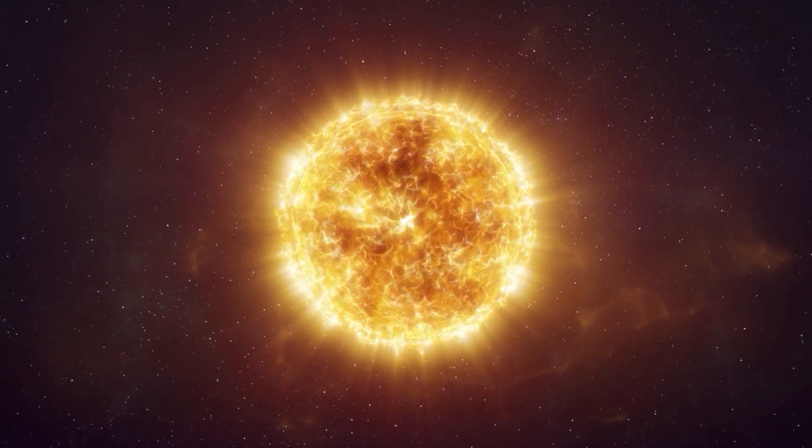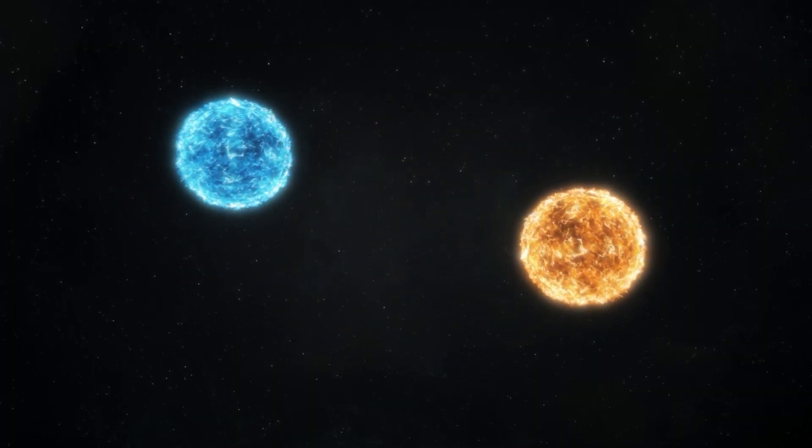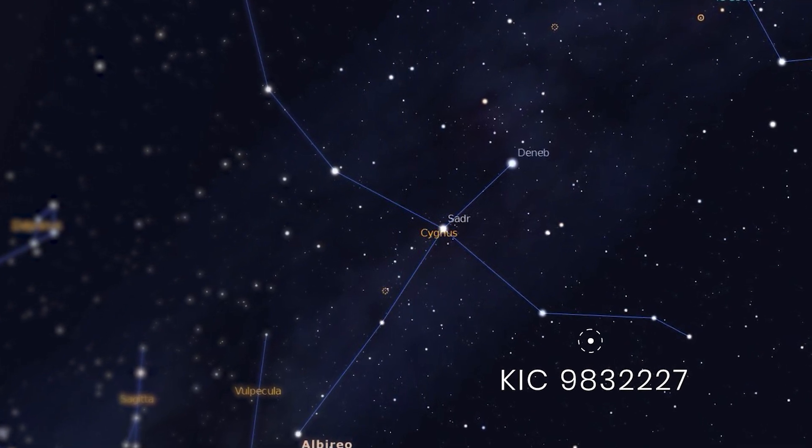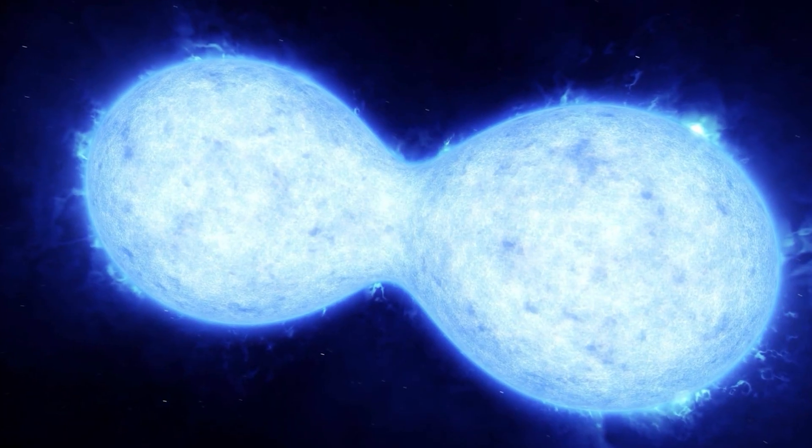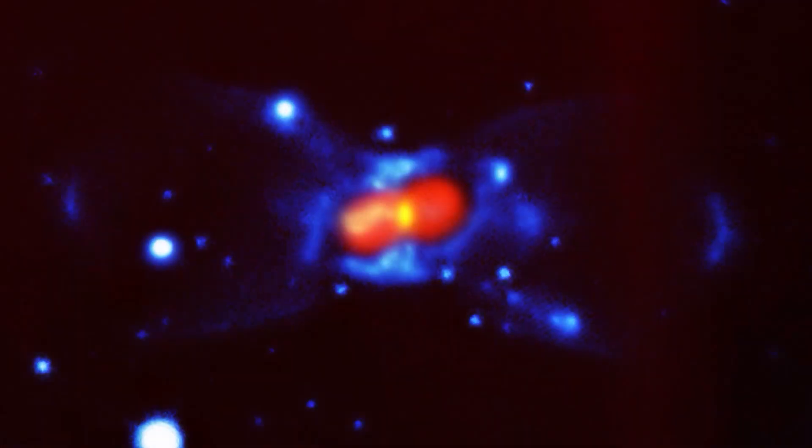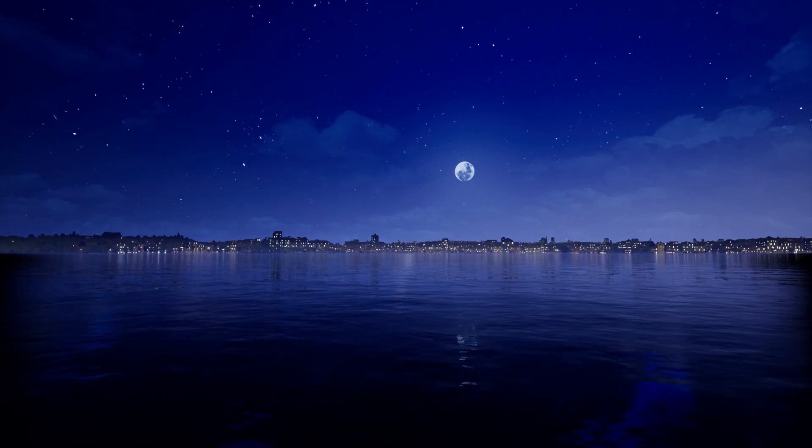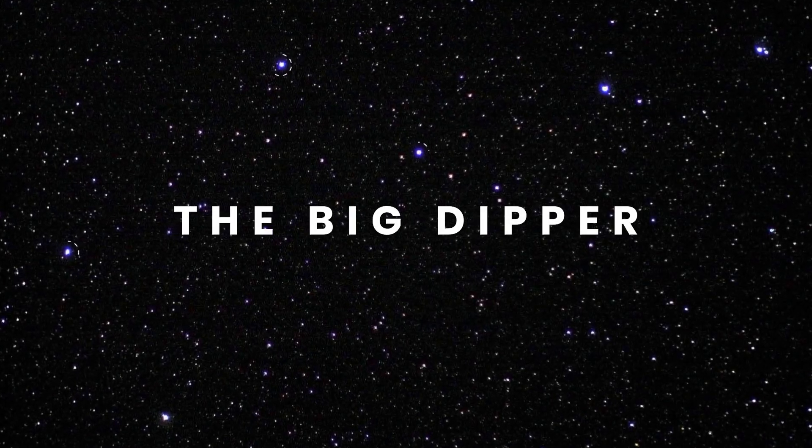But if Betelgeuse doesn't explode within our lifetimes, you still have a chance of witnessing a supernova with the naked eye. And it'll be the first naked eye nova in decades. There's a double star just off the left wing tip in the constellation of Cygnus the Swan. Astronomers are seeing the orbits of these two stars speeding up, which means they're getting closer and will merge together sometime around the year 2022, which is just around the corner. This star system lies 1800 light years away, but it should be visible with the naked eye, and its brightness will be second magnitude matching the brightness of the stars of the Big Dipper.